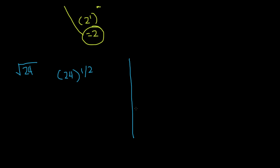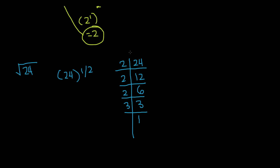If we go ahead and find the factors: write 24, and then 2 is the smallest number we can start with, so 2 times 12 is 24. Again we can use 2, because 2 times 6 is 12, and then again 2, because 2 times 3 is 6. This time we cannot use 2, so we move to the next smallest number, which is 3, and 3 is divisible by 3, giving us 1. So the factors of 24 are 2 times 2 times 2 times 3, to the power of 1 half.